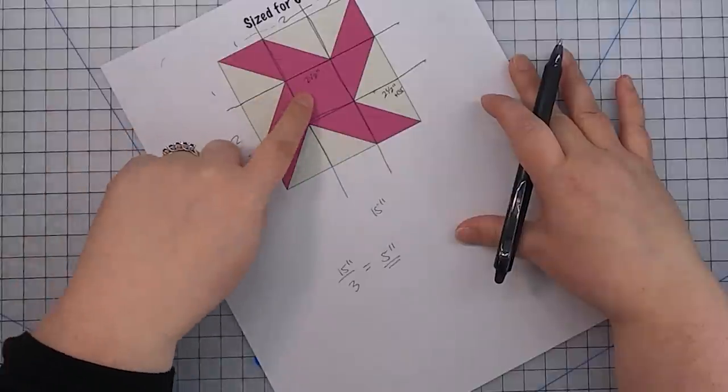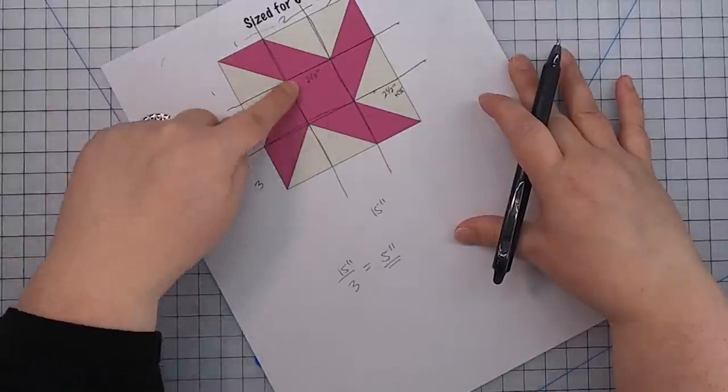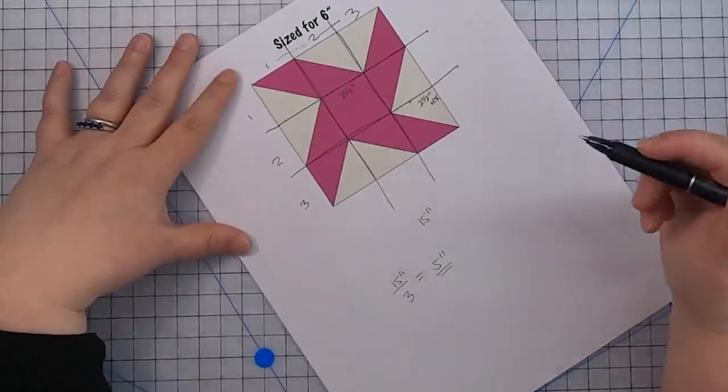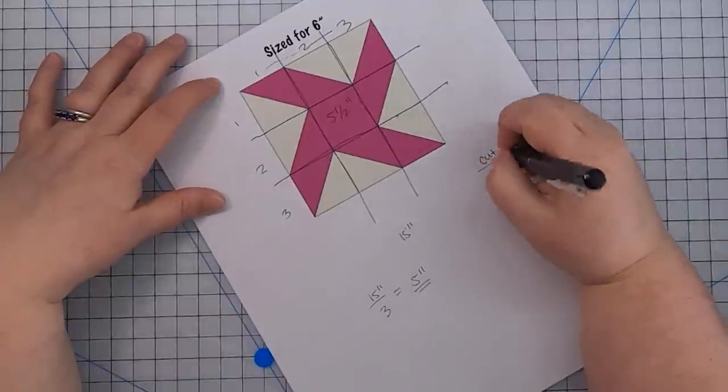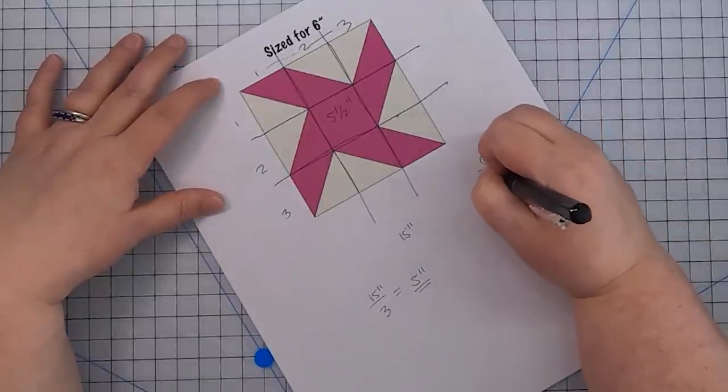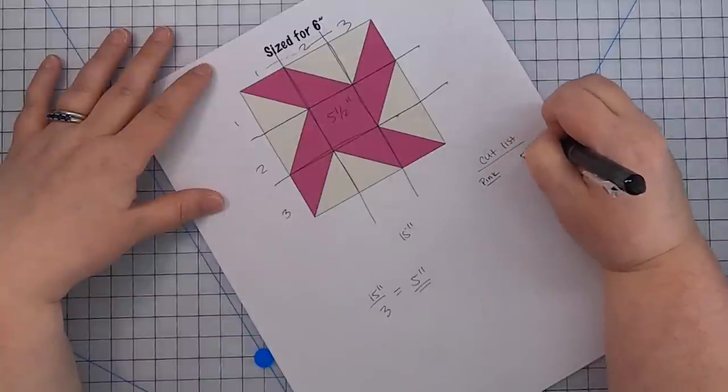So now it's just a matter of identifying the units and adding our seam allowances and whatever extra fabric we need to make those units. So first one is the easiest one, the square in the center. We want it to finish at five inches. So we are going to cut a five and a half inch square. I'm going to start a cut list. So for pink, we have a five and a half inch square.